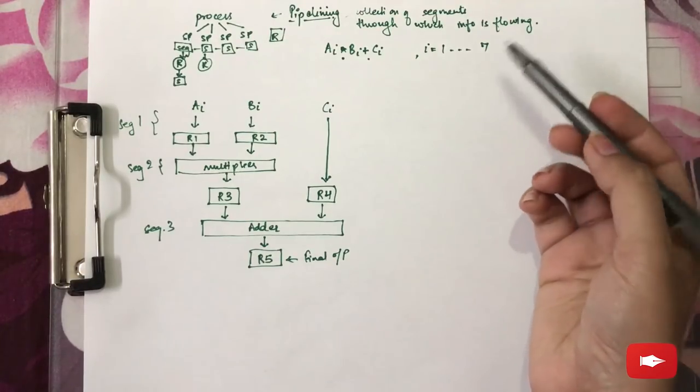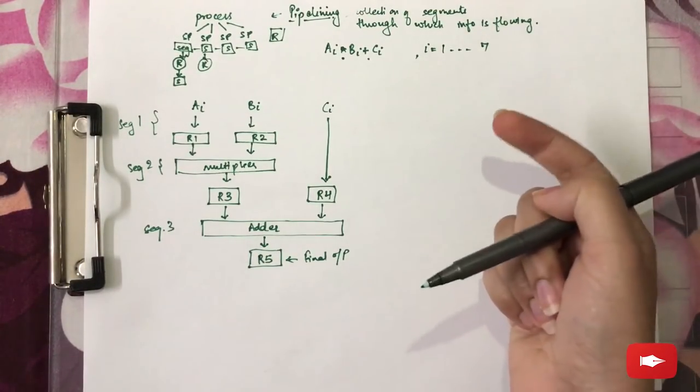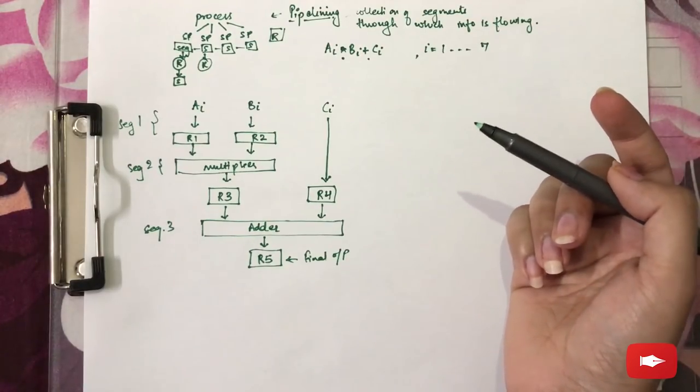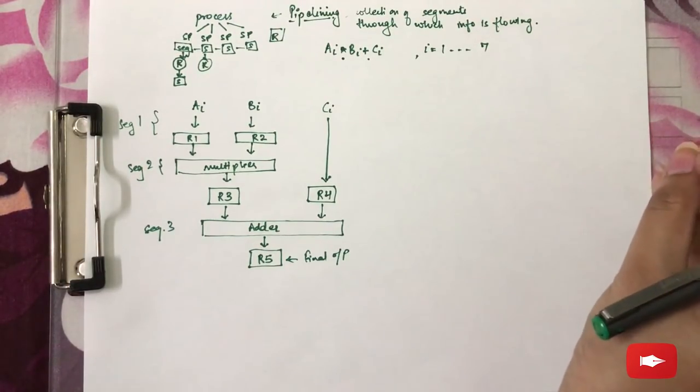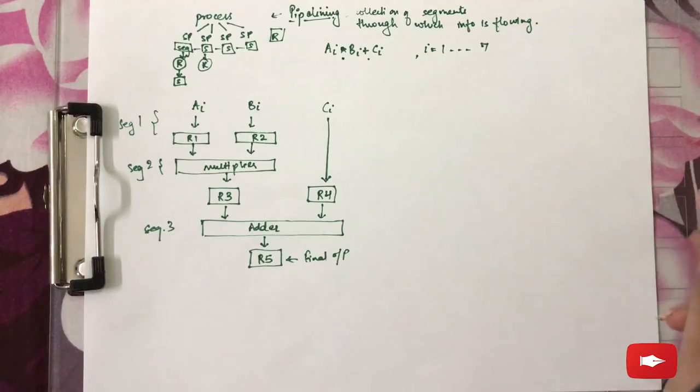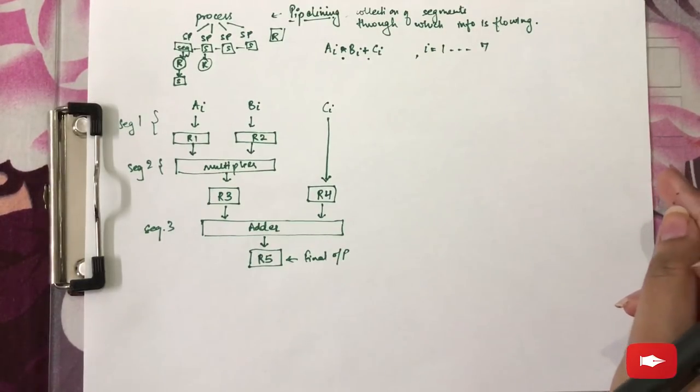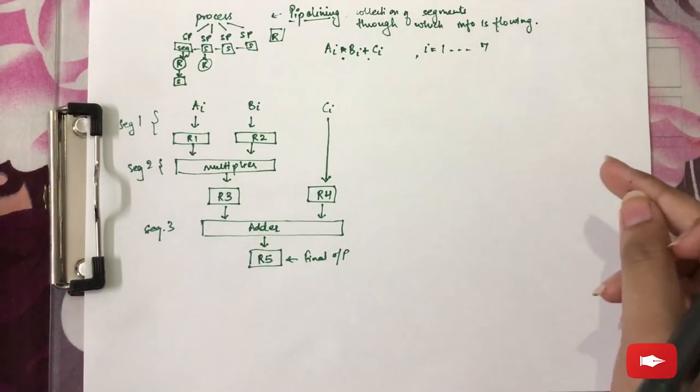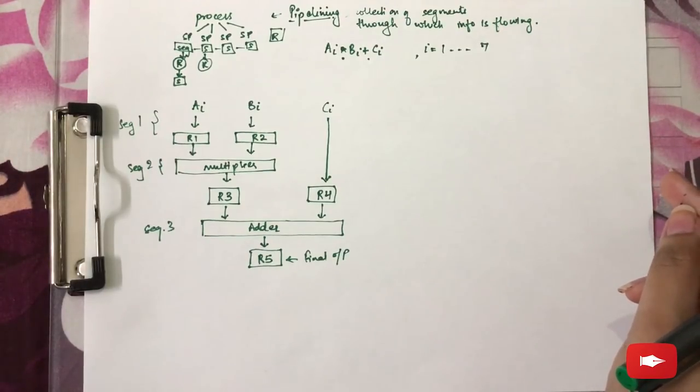Now, the five registers are loaded with new data every clock pulse. The effect of this clock we will illustrate again in an example in a table now. Let's make the table for that.